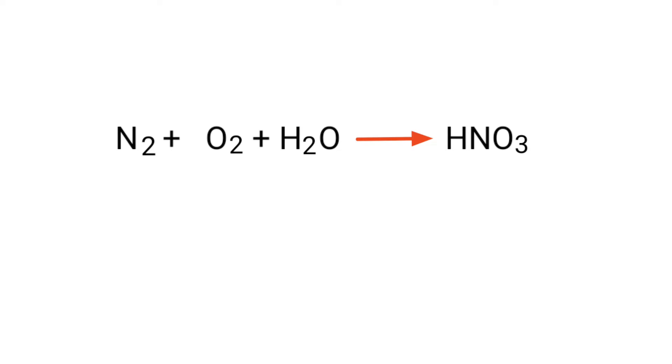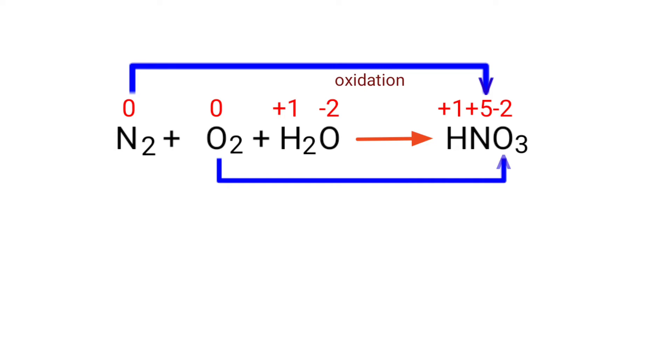Figure the reducing and oxidizing agents by the rules of assigning oxidation numbers. In this equation, nitrogen has a charge of 0 and it's changing into plus 5, so nitrogen is being oxidized. The oxygen has a charge of 0 and it's changing into minus 2, so oxygen is being reduced.